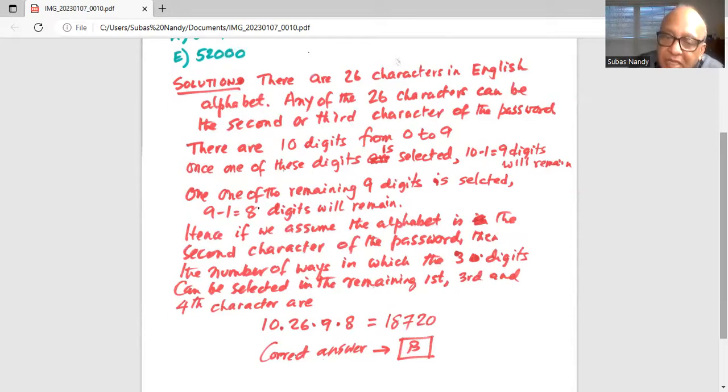So in the third position there can be 9 possibilities, and in the fourth position of the password or fourth character of the password, I've taken two digits out in the first and the third, there are 8 possible digits left.